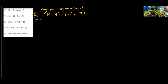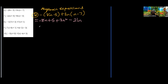Negative times 8n is negative 8n, and negative of negative 5 is positive 5. Then 3n times n is 3n squared. 3n times negative 7 is negative 21n. So we have n terms and an n squared term.